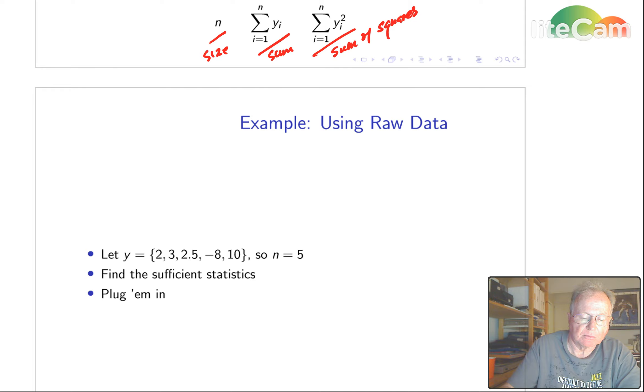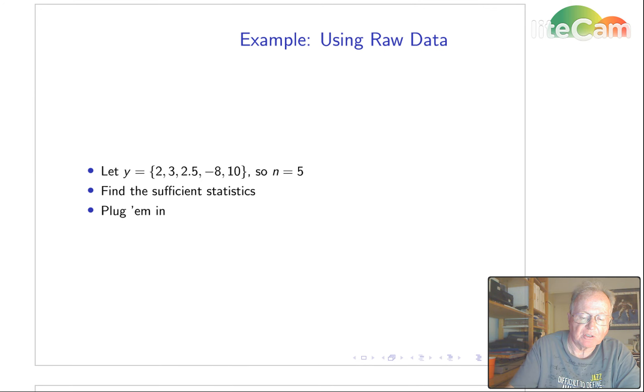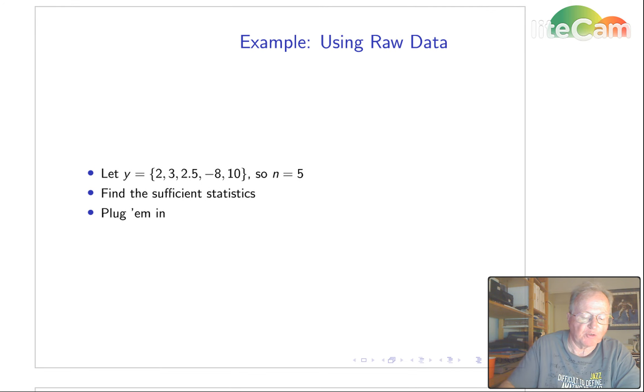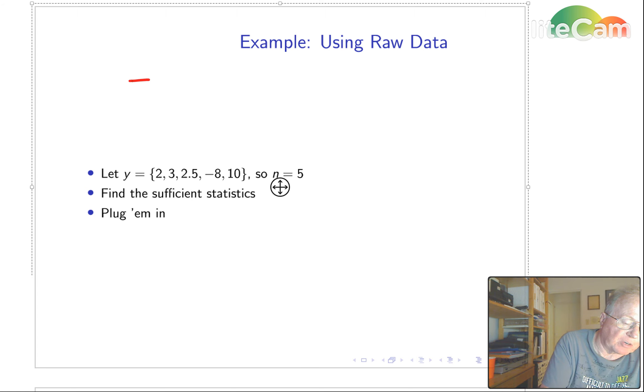So let's use these simplified formulas and calculate a variance. Here's a sample of size five. We're going to find the sufficient statistics and then plug them into the formula. So start with the sum,